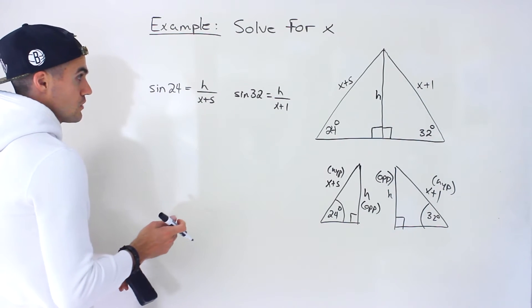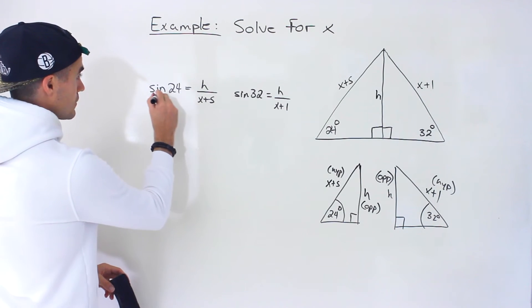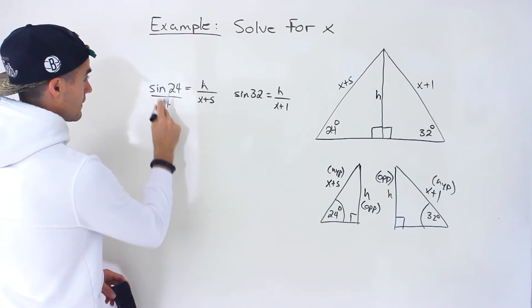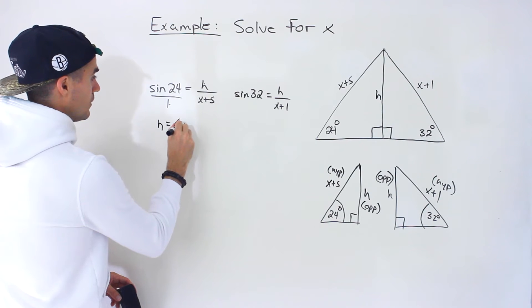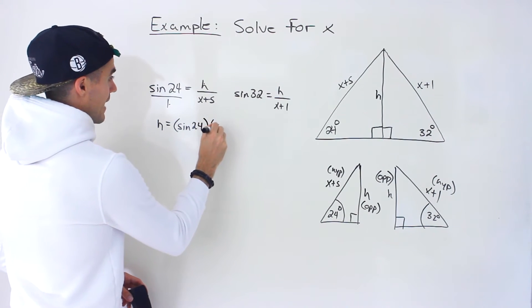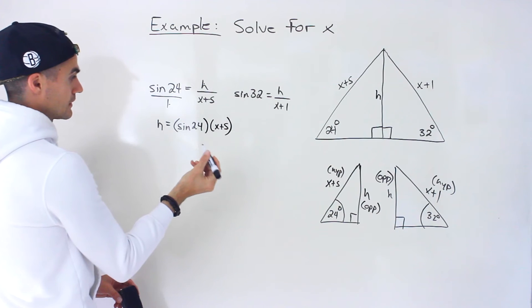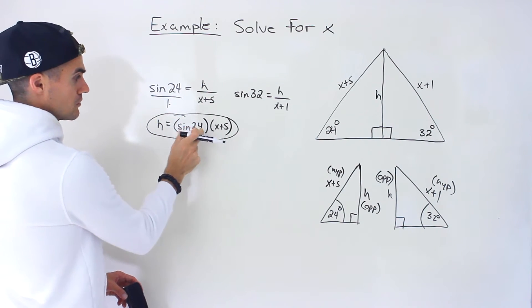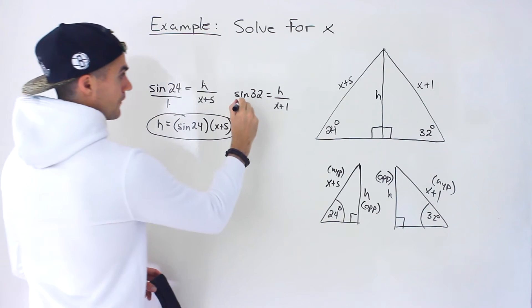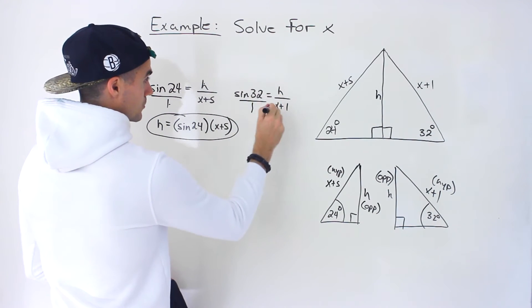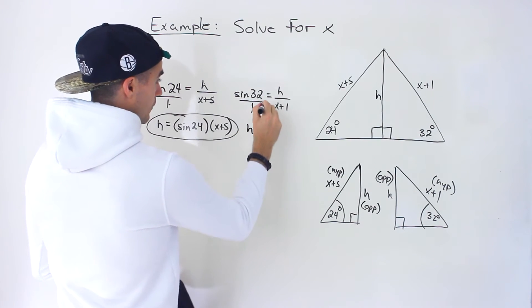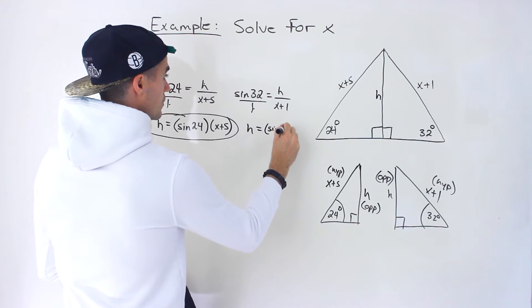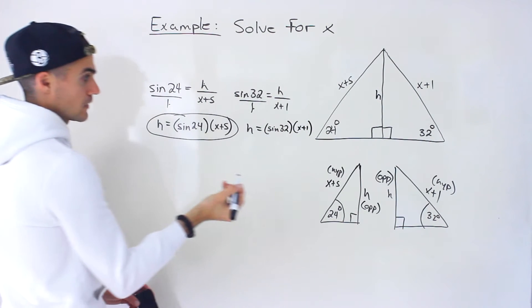What I'm going to do is actually isolate for the h in both of these. So if I cross multiply, 1 times h would give us h and then we'll have sine 24 times x plus 5. I'm going to leave it as sine 24 for now. Then over here, I'm going to cross multiply this. 1 times h would give us h and then we'll have sine of 32 times x plus 1.